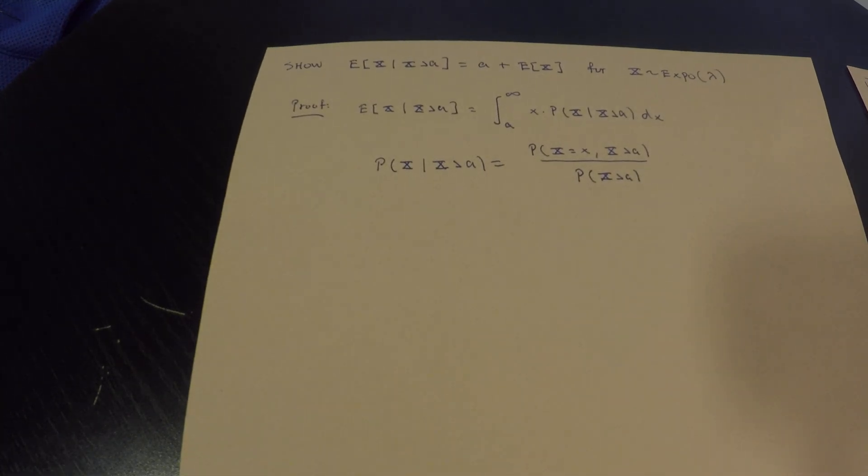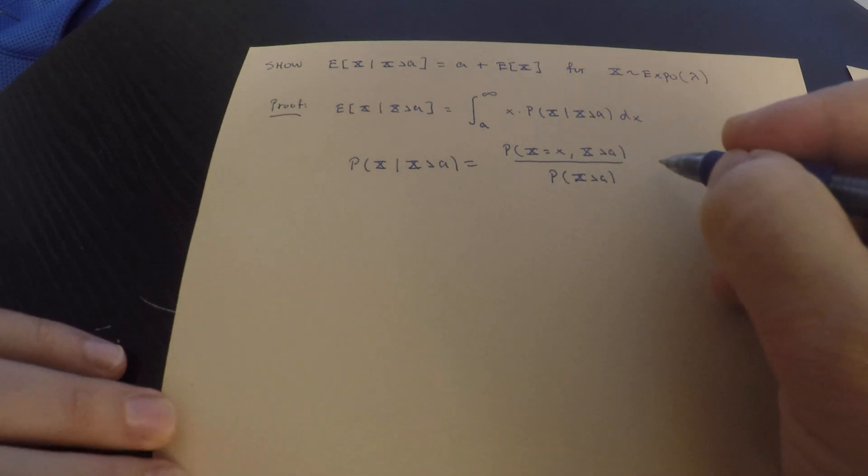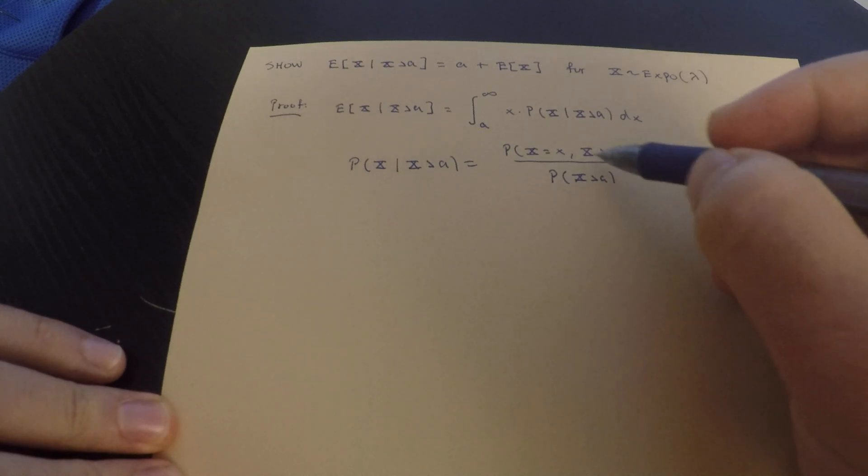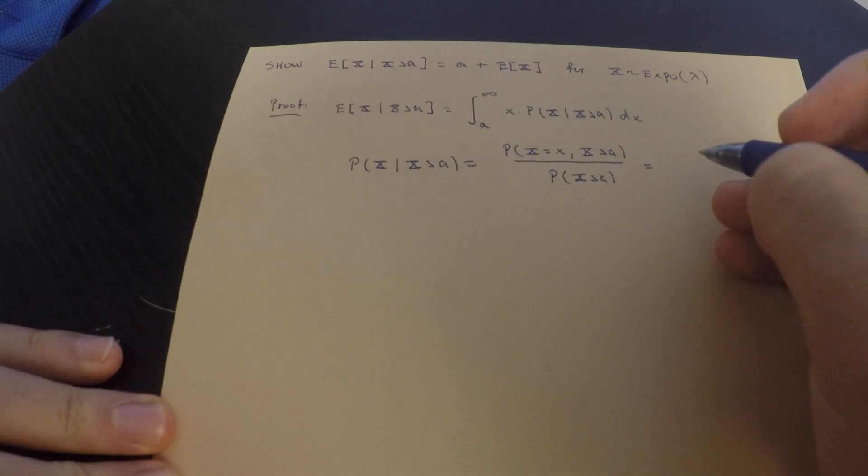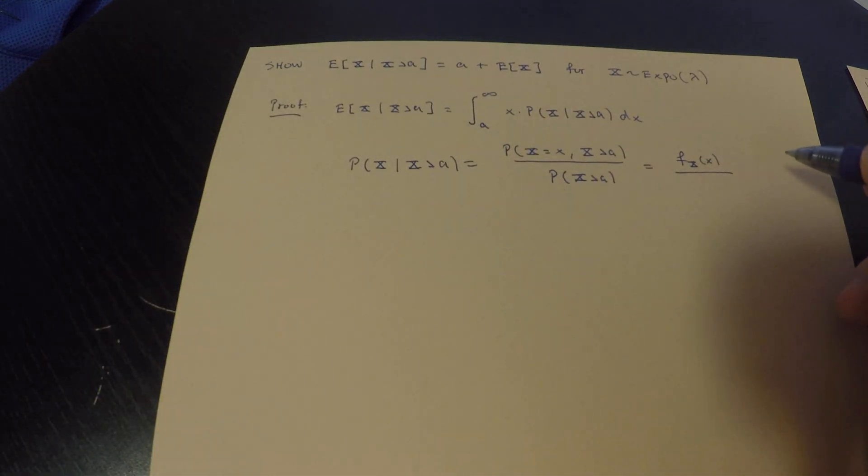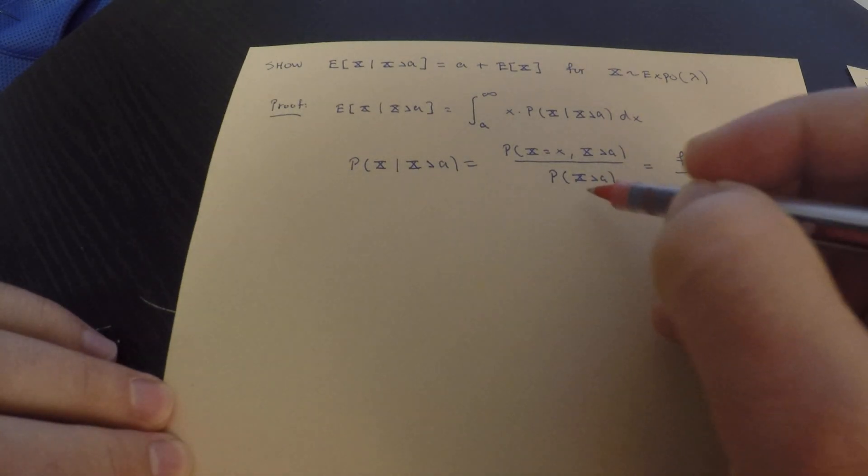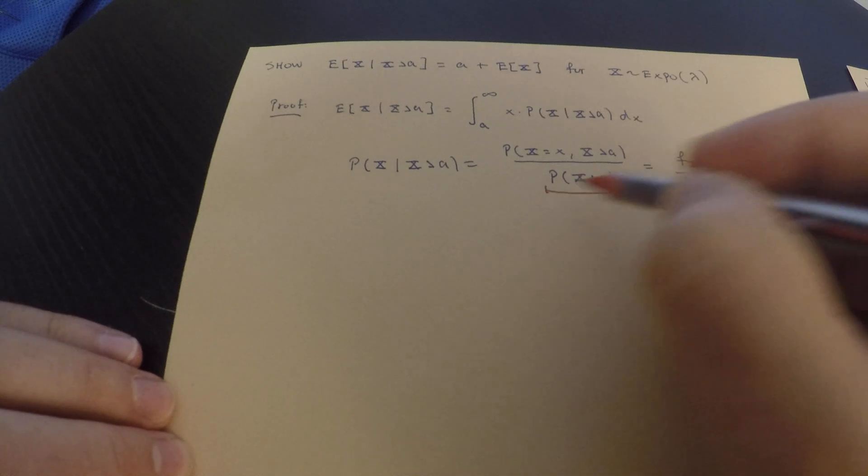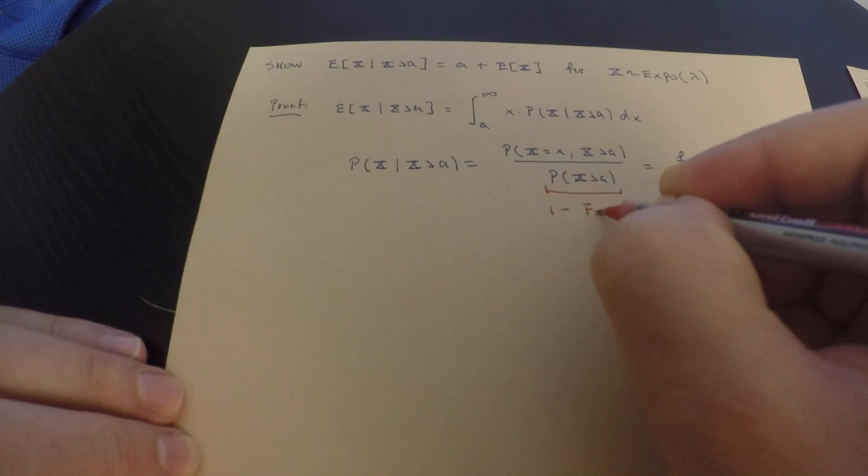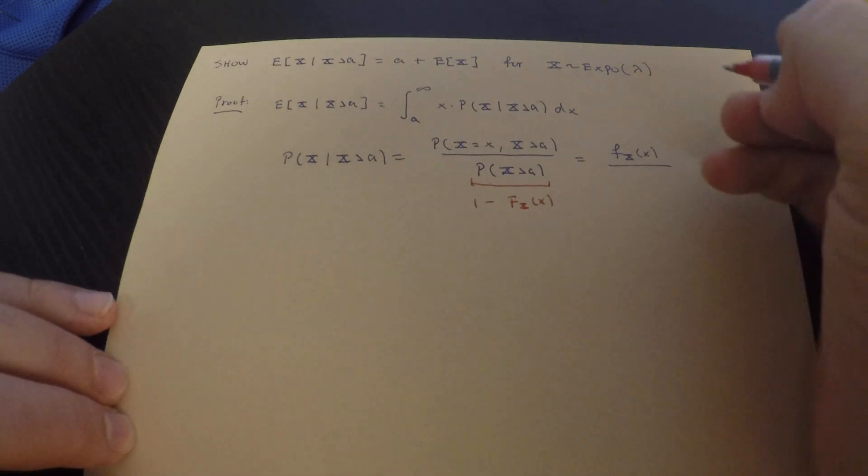Now, the numerator here is just the density function of x. And why is that? We're essentially accounting for the fact that x is greater than a using this integral. So this is really just the density function of x, which we know. And now I need to divide that by the probability x is greater than a. Probability x is greater than a is the survival function. This is the survival function. This is 1 minus the CDF. You should be very familiar with that, because in this case, since we know our PDF, it's easily known.